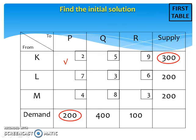Here, between 300 and 200, the smallest value is 200, so assign 200 to this square. Now, the demand at this column is satisfied and the supply at this row is left with 100 units.